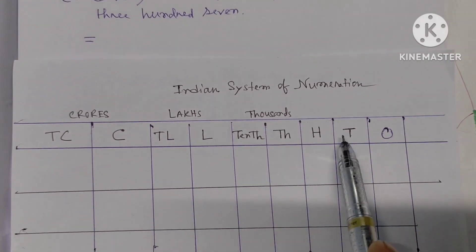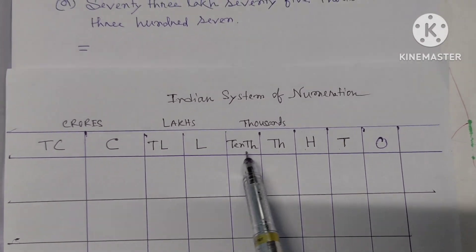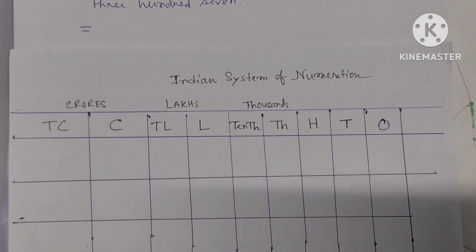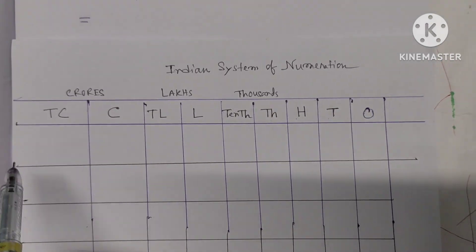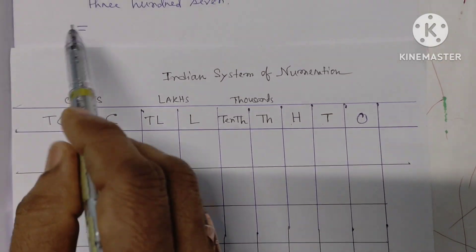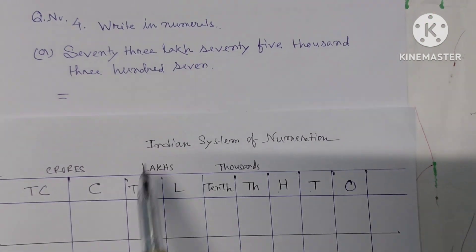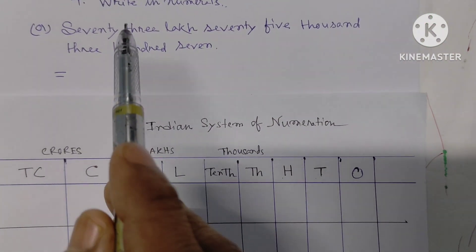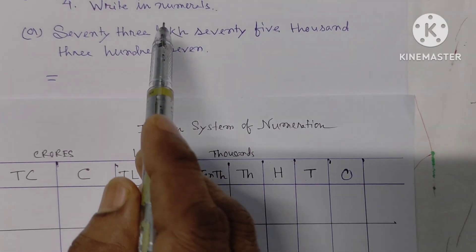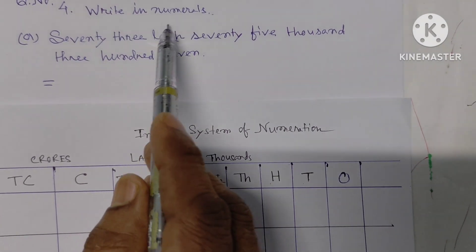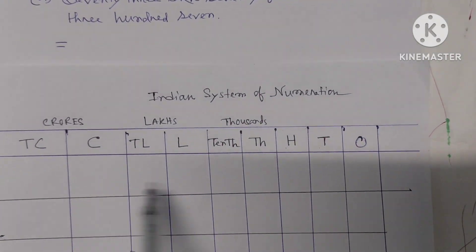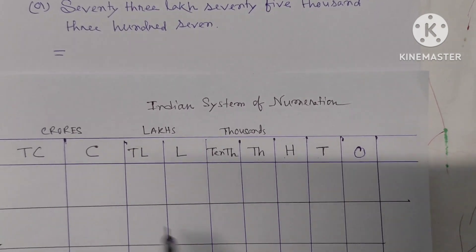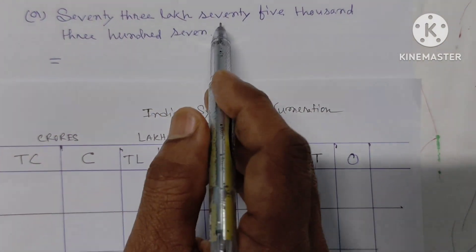The place value chart goes: ones, tens, hundreds, thousands, ten thousands, lakhs, ten lakhs, crores, ten crores. So 73 lakhs means we place 7 in ten lakhs and 3 in lakhs.